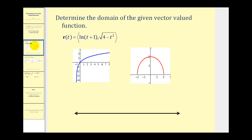Here we want to find the domain of the vector-valued function r(t). There are only two components — we have to find the domain of natural log of (t plus one), find the domain of the square root of (four minus t squared), and then determine the intersection of those two domains. I've provided the graphs of these functions to help us determine the domain.